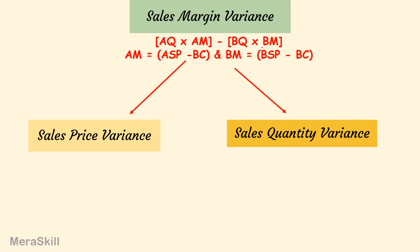Now, the actual margin is the actual selling price minus the budgeted cost. The budgeted margin is the budgeted selling price minus the budgeted cost — that is the budgeted profit. The difference in cost has already been taken in the cost variances. So when we take the margin variance, it is based on the standard or budgeted cost.